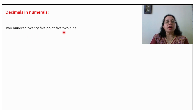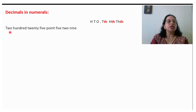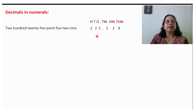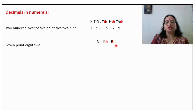Now 225.529 is given in words and you are supposed to write in numerals, or write in decimal form. First write down the places, then fill in: 2 will come in the hundreds place, 25 will come in the tens and ones, then the decimal point, then 529 — writing one digit at a time. Similarly, 7.82: one, tenth, and hundredth — so 7.82.